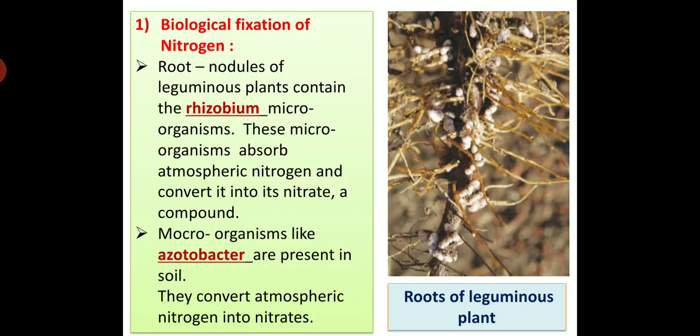Second, microorganisms like azotobacter are present in soil. They also convert atmospheric nitrogen into nitrates. In this way, in biological fixation of nitrogen, microorganisms like rhizobium and azotobacter convert nitrogen into its nitrate, means a compound.